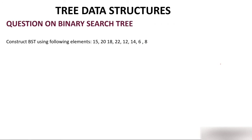Let's start with a question on binary search tree. Construct a binary search tree using the following elements. The procedure is: the first element becomes the root. So the first element is 15, it becomes the root. The next element is 20. Compare 20 with 15 - is 20 less or greater? Greater. So it comes to the right of 15. Then the next element is 18.